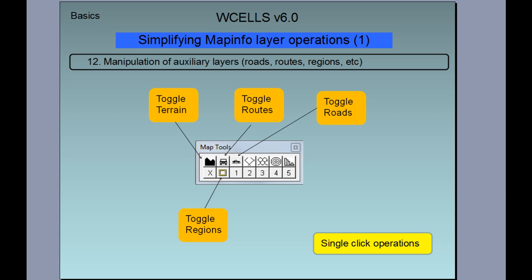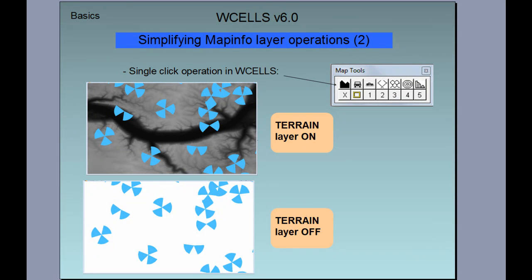To simplify mapping layer operations, we have several toggle buttons for toggling on and off terrain heights, routes, roads, and regions — all single-click operations. In order for this to work, certain rules must be applied for table names, which you can read about in the user manual. For example, terrain heights can be switched on and off, which is sometimes very useful depending on what kind of information you would like to present alongside the cells.